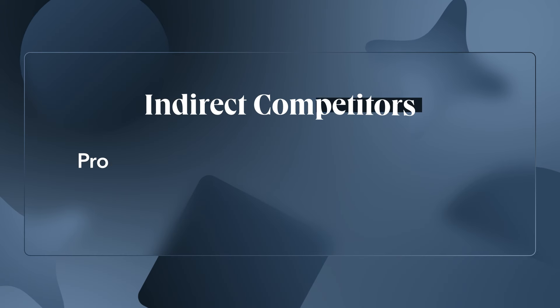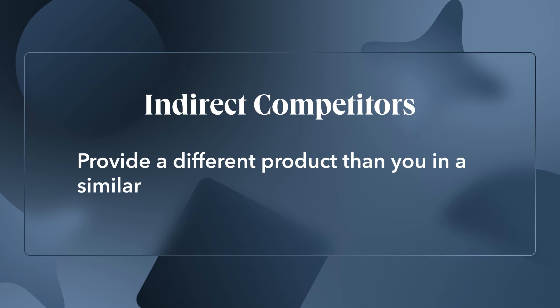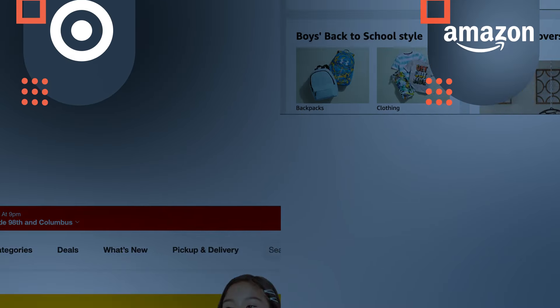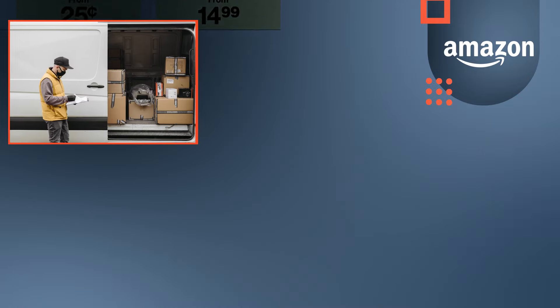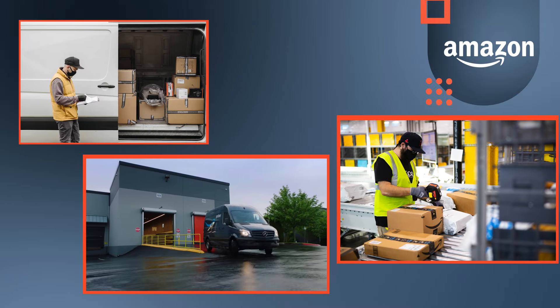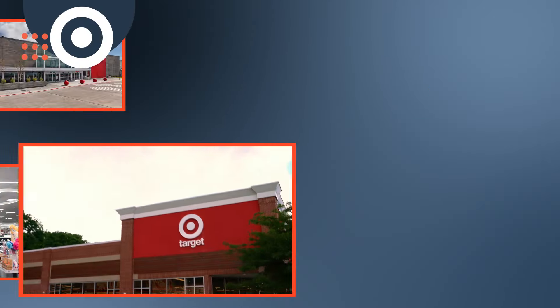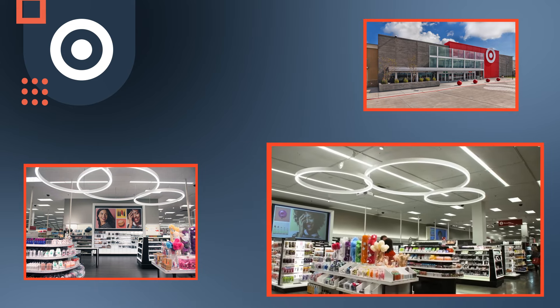Indirect competitors provide a different product than you in a similar category. Think of Amazon and Target as indirect competitors. Though they offer similar products, Amazon focuses on convenience and fast shipping so you don't have to leave home, whereas Target is a one-stop shop offering a strong in-person shopping experience. My indirect competitor? Michael B. Jordan — not because I can act really well or I'm nearly as handsome as he is, really just his hairline. I envy it greatly and I'd like to take him out of the running for it.